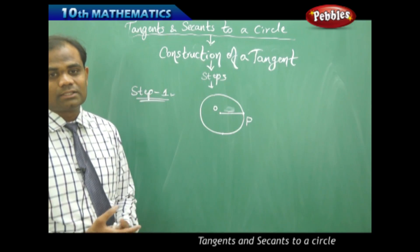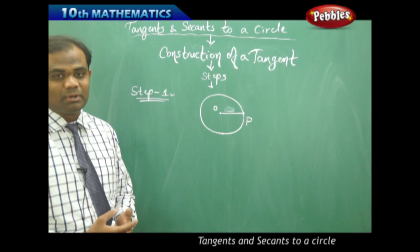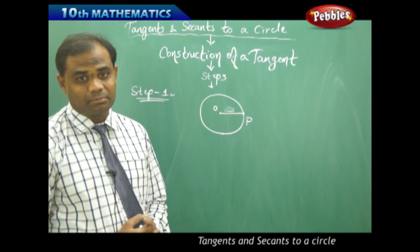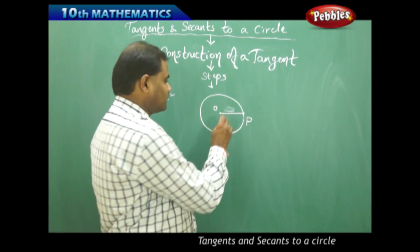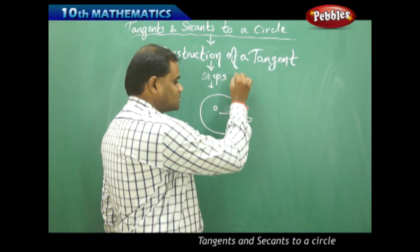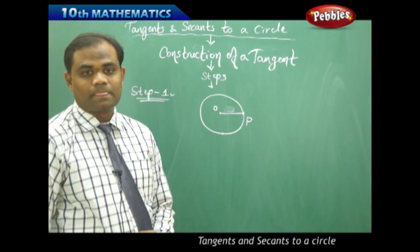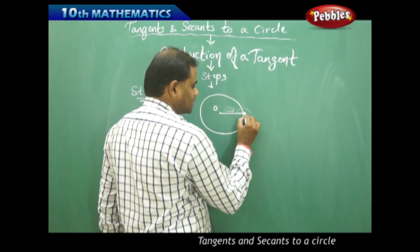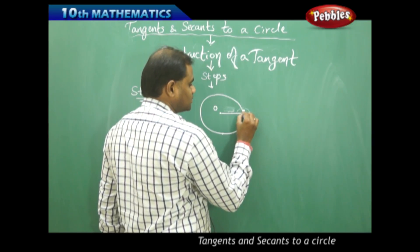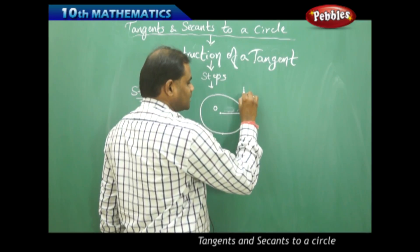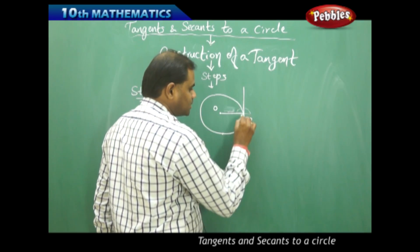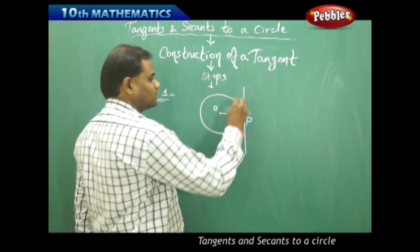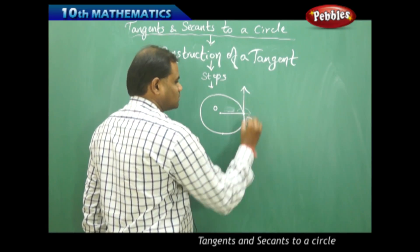Now, since the radius is perpendicular to the tangent, if I want to draw a tangent at the point of contact P, I need to draw exactly 90 degrees from OP. So I put the protractor here and measure the angle which is 90 degrees. Marking 90 degrees and extending that line, I get the perpendicular line which is called the tangent.